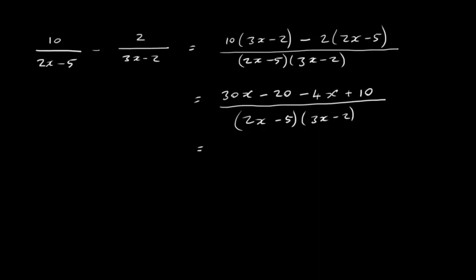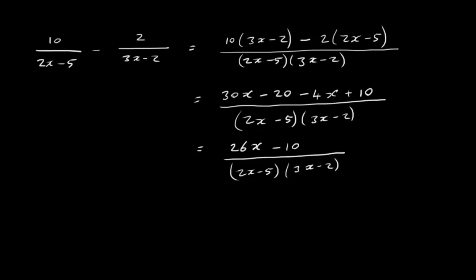Simplifying: 30x minus 4x gives 26x, and minus 20 plus 10 gives minus 10. So the result is 26x minus 10 over 2x minus 5 times 3x minus 2.